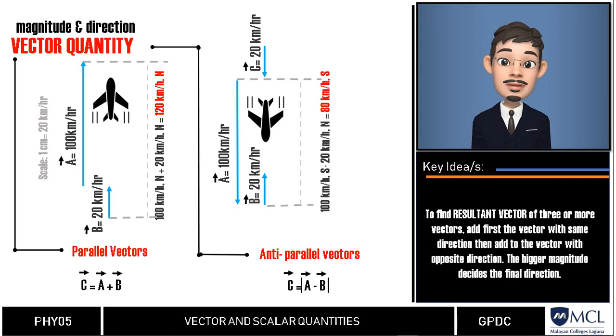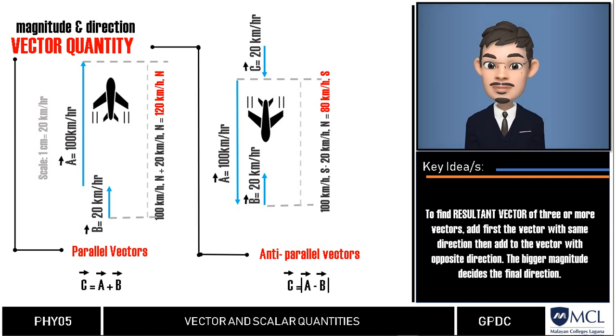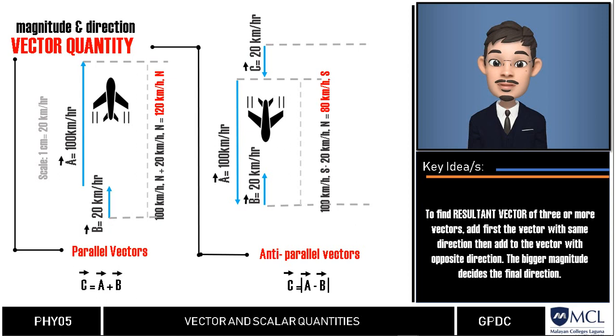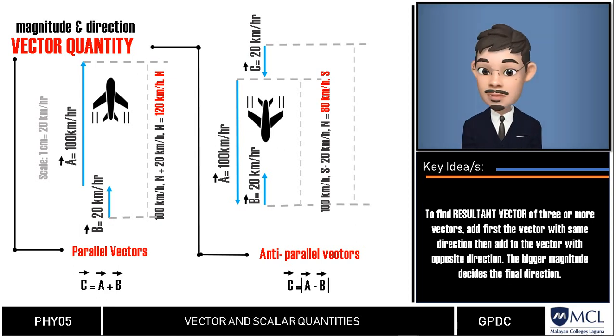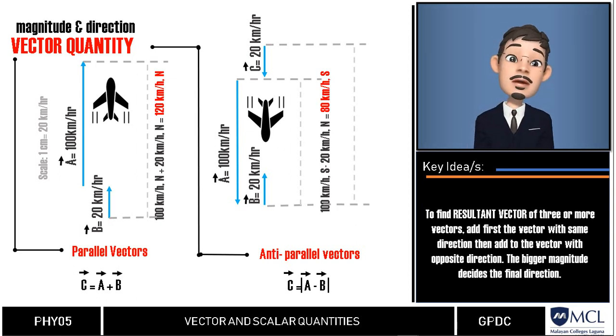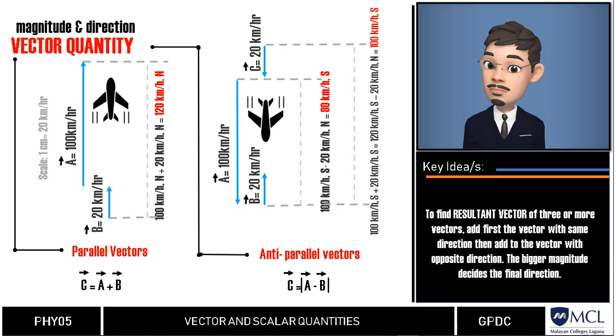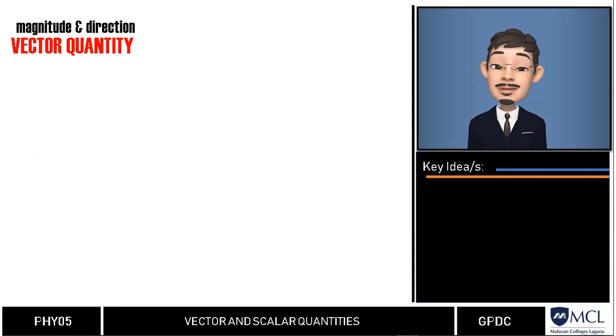To find the total vector, we may add vector A and C because they are in the same direction, which is true south, then we will algebraically add our vector B, which is in opposite direction at 20 km per hour. Our total vector or the vector sum of the airplane is still 100 km in one hour. Remember that parallel and anti-parallel vectors are only applicable for collinear vectors or vectors lying in the same line.